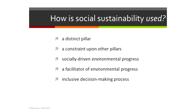What I'm going to try to do with these five different uses of social sustainability is examine how we have conceived of social sustainability as interacting with the other pillars — what role does it play externally, not what does it look like on the inside. It is used as a distinct pillar, as a constraint on the other pillars, as a facilitator of environmental progress, as socially driven environmental progress, or finally as inclusive decision-making or people-centered sustainability.